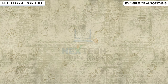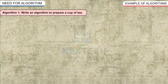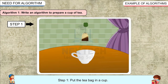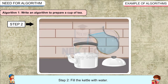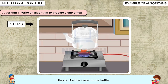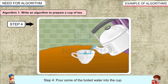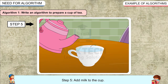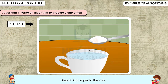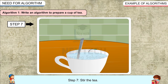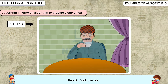Example of Algorithms. Algorithm 1: Write an algorithm to prepare a cup of tea. Step 1: Put the tea bag in a cup. Step 2: Fill the kettle with water. Step 3: Boil the water in the kettle. Step 4: Pour some of the boiled water into the cup. Step 5: Add milk to the cup. Step 6: Add sugar to the cup. Step 7: Stir the tea. Step 8: Drink the tea.